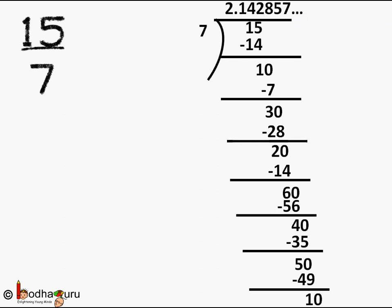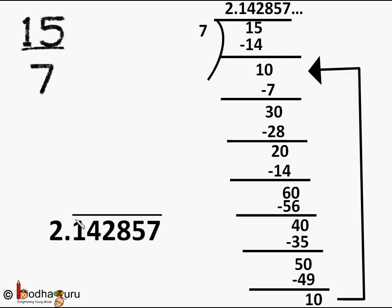That is, non-terminating decimals also reside on the number line. And how do we write? We write it as 2 and 142857 with a bar over it. This bar tells that this part will keep repeating over and over. So it is non-terminating recurring decimal which also resides on the number line.